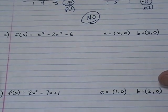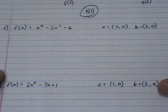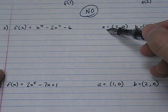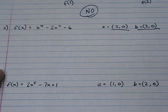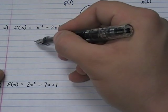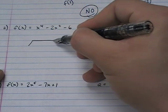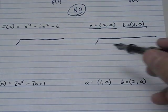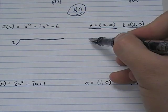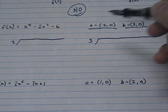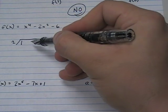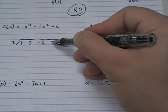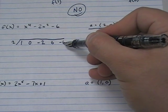Another question, problem number two. Different polynomial, different points. Is there a zero between point A and point B? Yes or no. And again, the easiest way for me to do this is through synthetic division. And on this side I'm going to synthetically divide by 2. On this side I'm going to synthetically divide by 3. So 1x to the fourth, 0x to the third, negative 2x squared, 0x, and then negative 6.